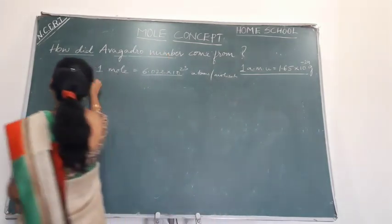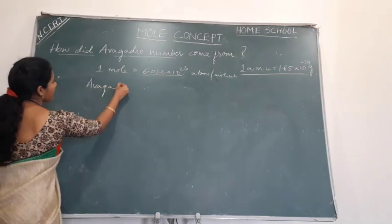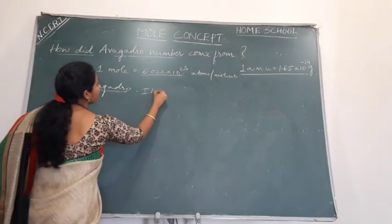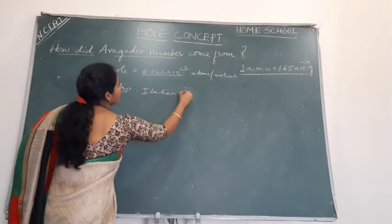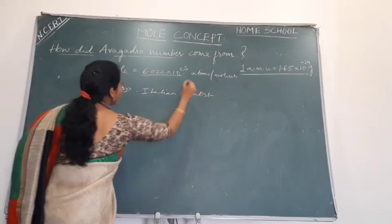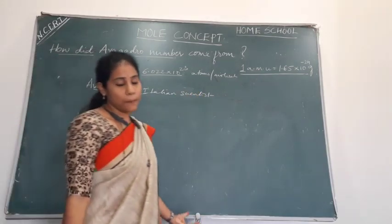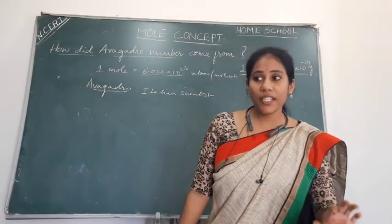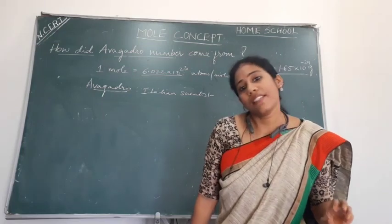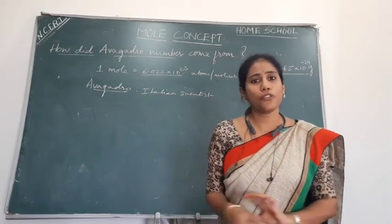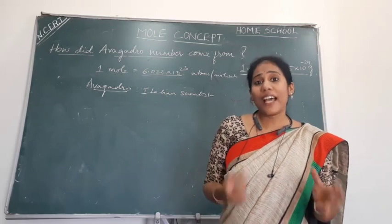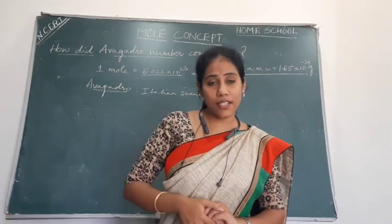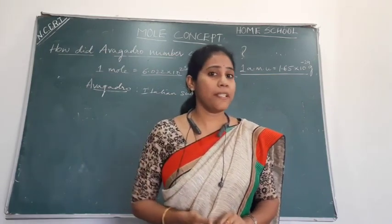Avogadro is the name of a scientist — an Italian scientist. There is a very interesting story about this person. Avogadro was initially a lawyer, but he had a lot of interest towards physics and mathematics. So he completed his graduation in physics and mathematics and later went into research in physics concepts, and he became a very famous scientist.